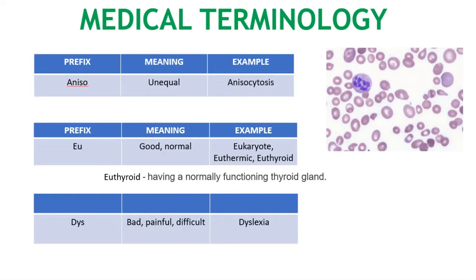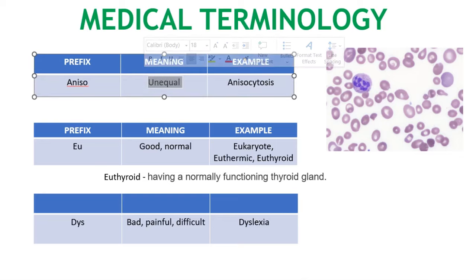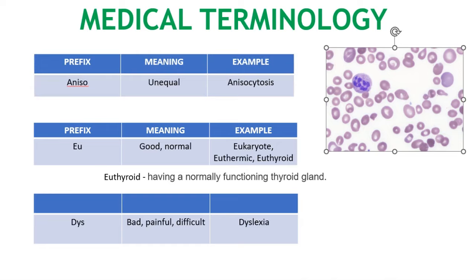Aniso means unequal. Imagine red blood cells — if they are not the same size, they are unequal in size. So our blood cells being unequal in size is how we use aniso.